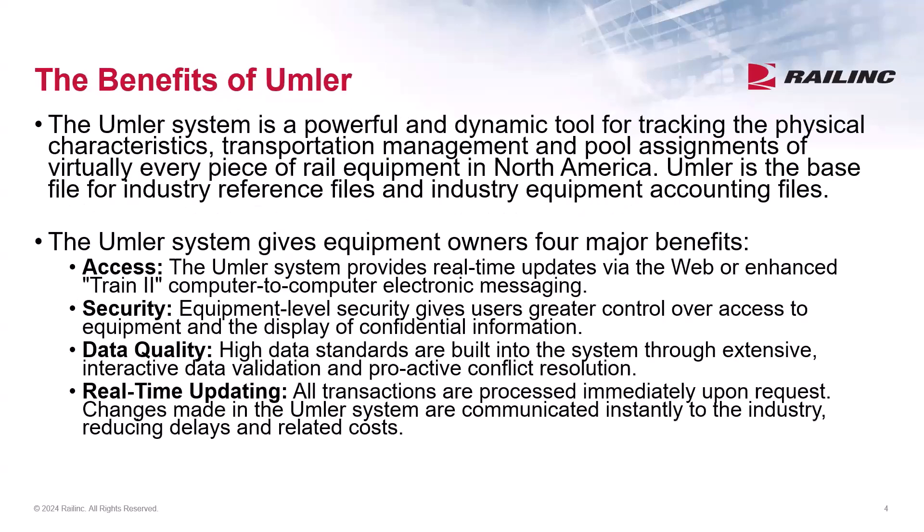The Umler system is the industry database for tracking the physical characteristics, transportation, and equipment management for over 2 million pieces of rail equipment. Umler offers many benefits to the rail industry and equipment owners: access, data quality, real-time updating, and security.